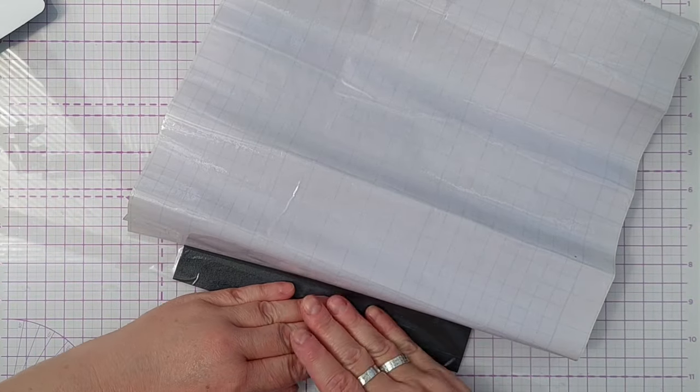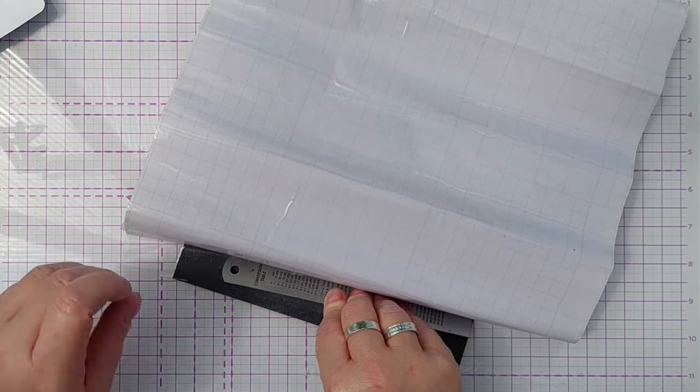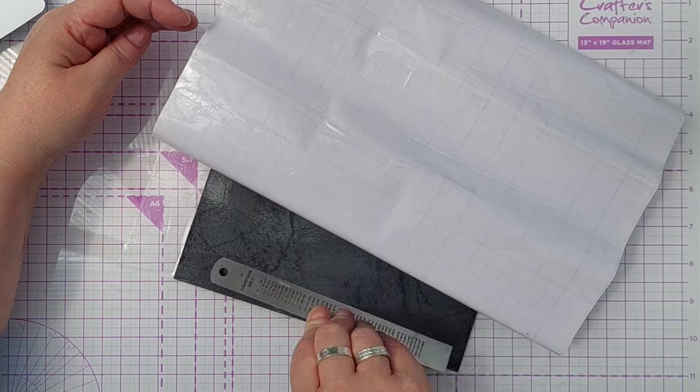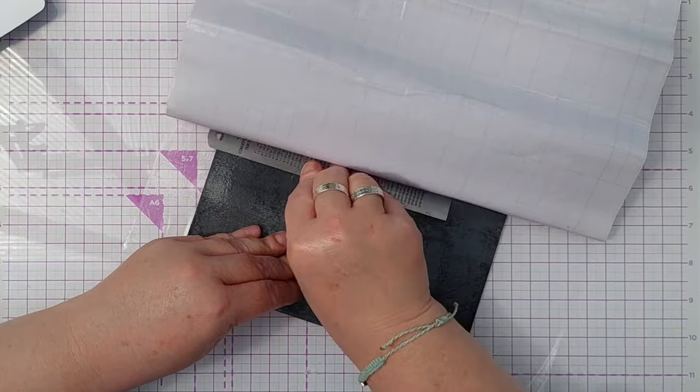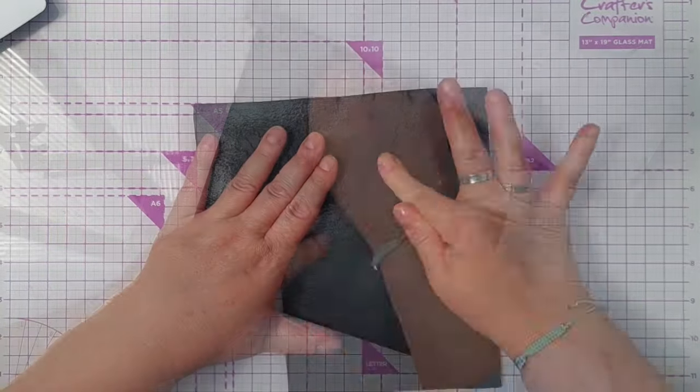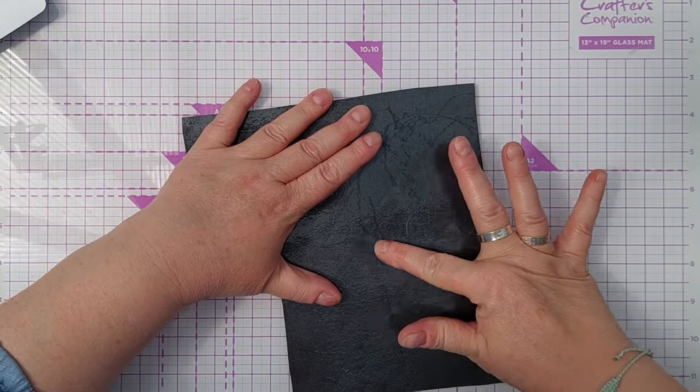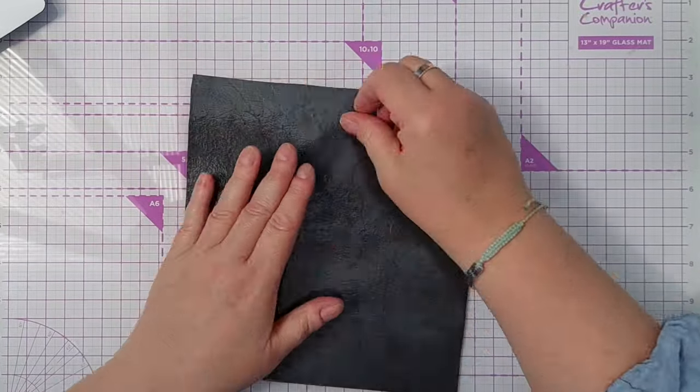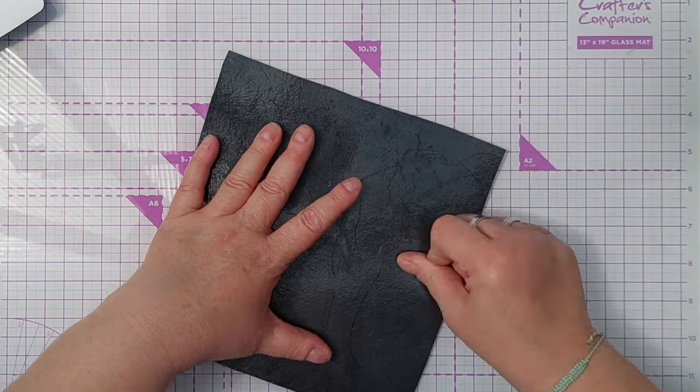I want to try not to get any creases in this, so I'm going to use a ruler just to gently push this along like this to cover the whole piece. I'm going to burnish this all over to try and get it all stuck down nicely. It doesn't matter if there's a few imperfections - some will come out during the die cutting process and others will be hidden.